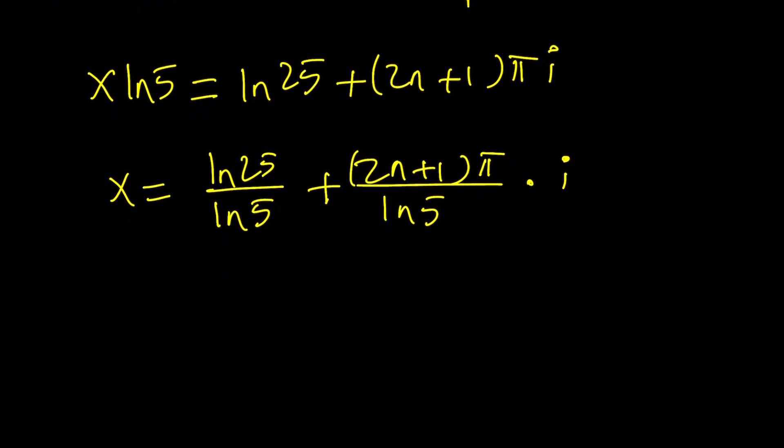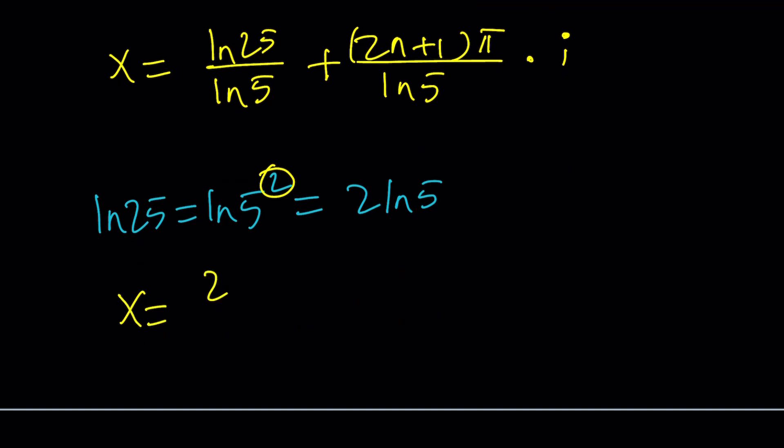But let's go ahead and simplify this a little bit. How do you simplify ln 25? Well, ln 25 is ln 5 squared. So we can write it as 2 ln 5. Again, using properties of logarithms. So properties are very important. We've been using them all the time. So we can now write this ln 25 as 2 ln 5 divided by ln 5. And then the imaginary part is going to be 2n plus 1 pi over ln 5, which is a real number, times the imaginary unit i. But of course, ln 5 is going to cancel out, leaving us with something super duper simple.